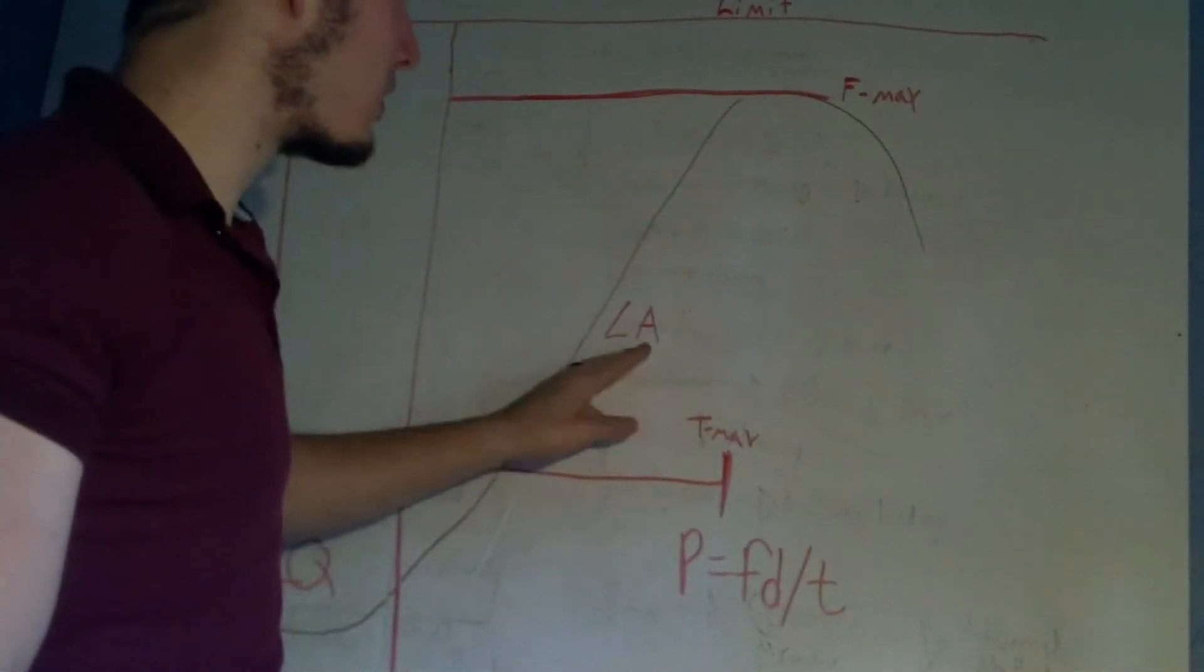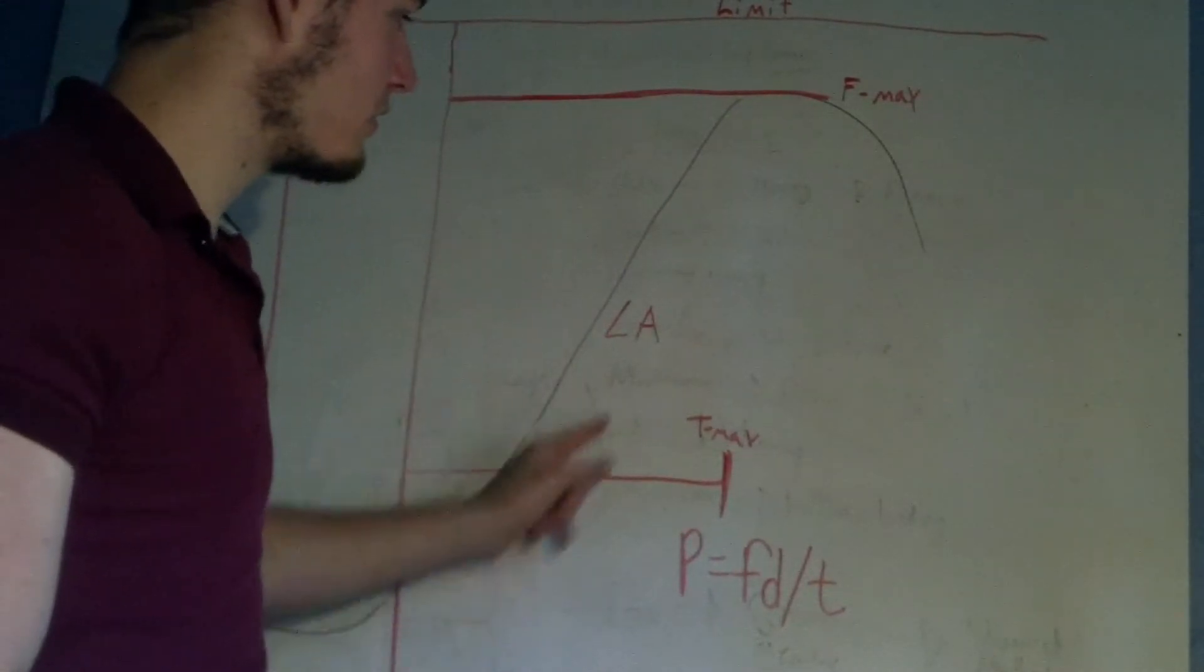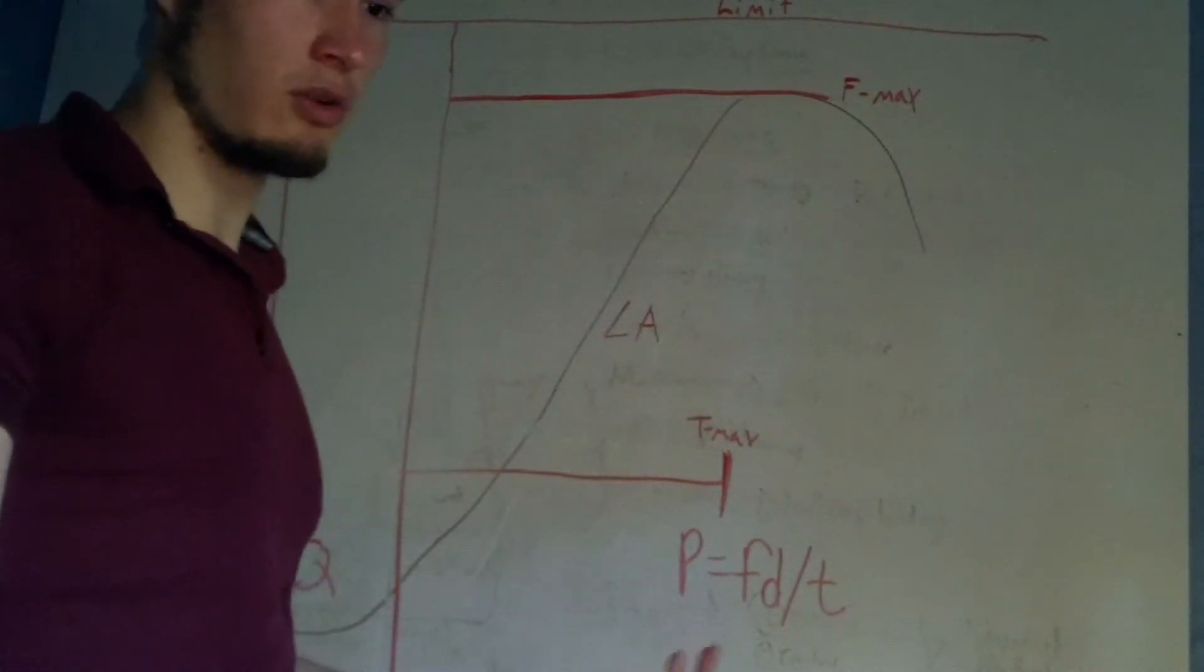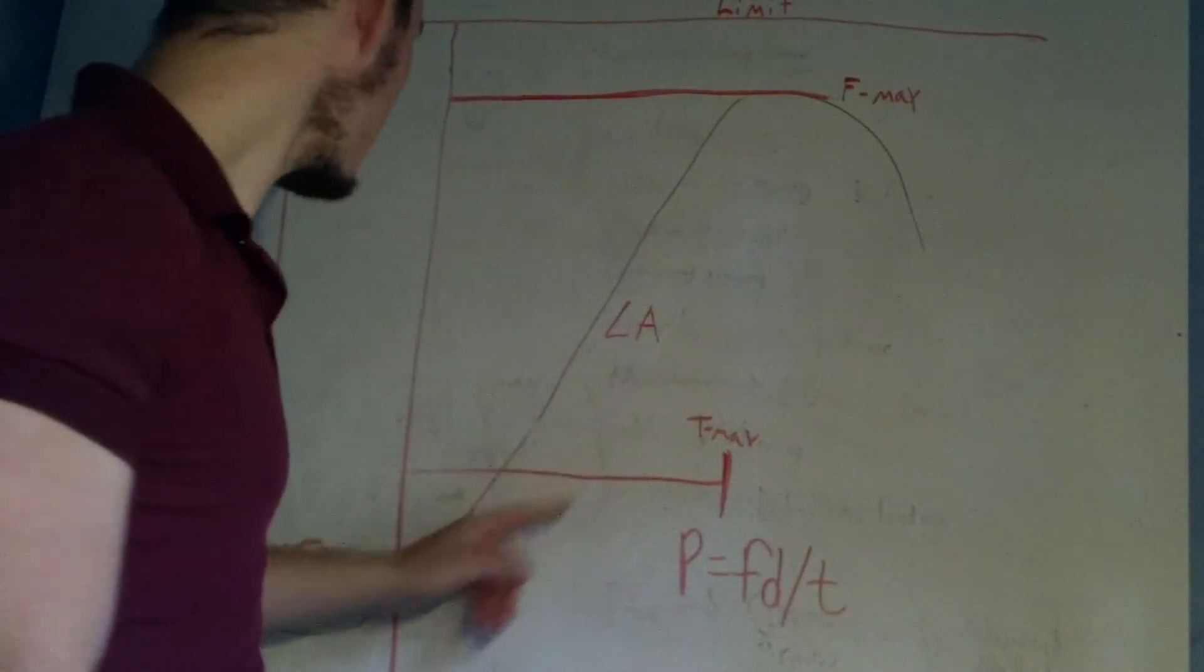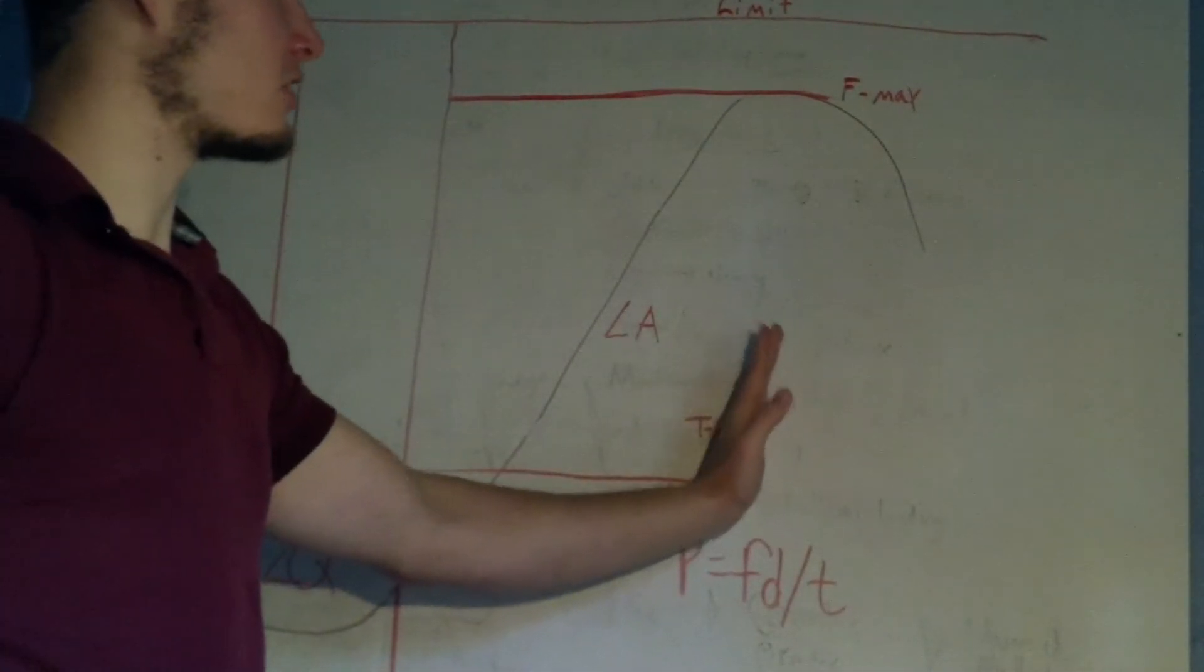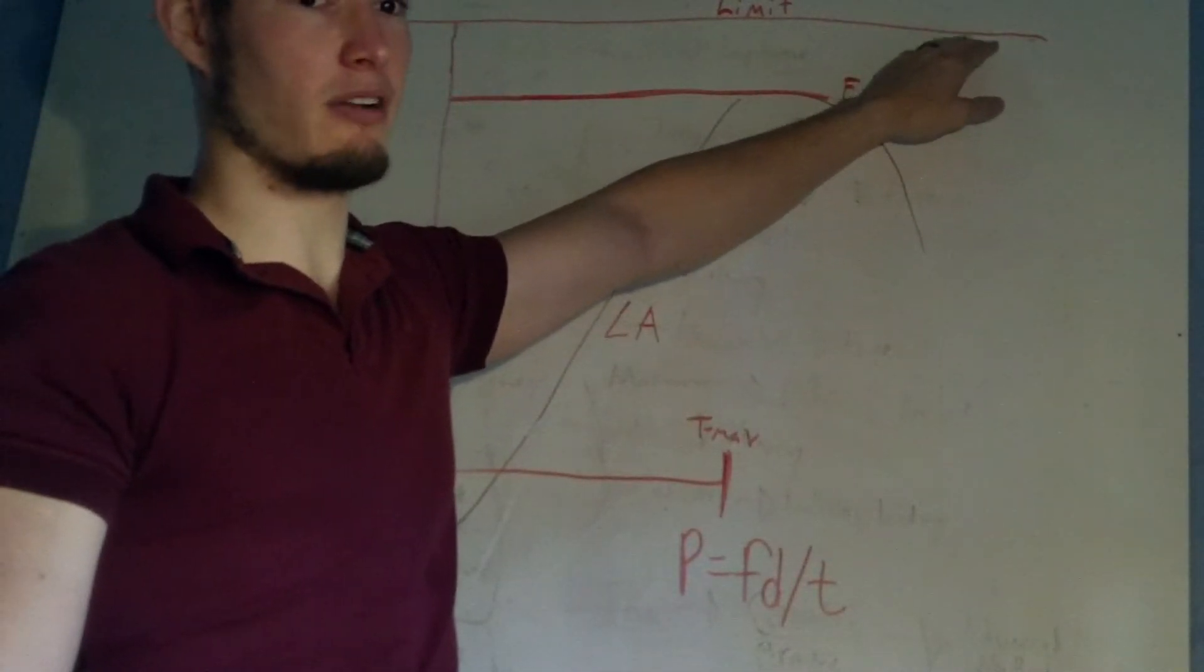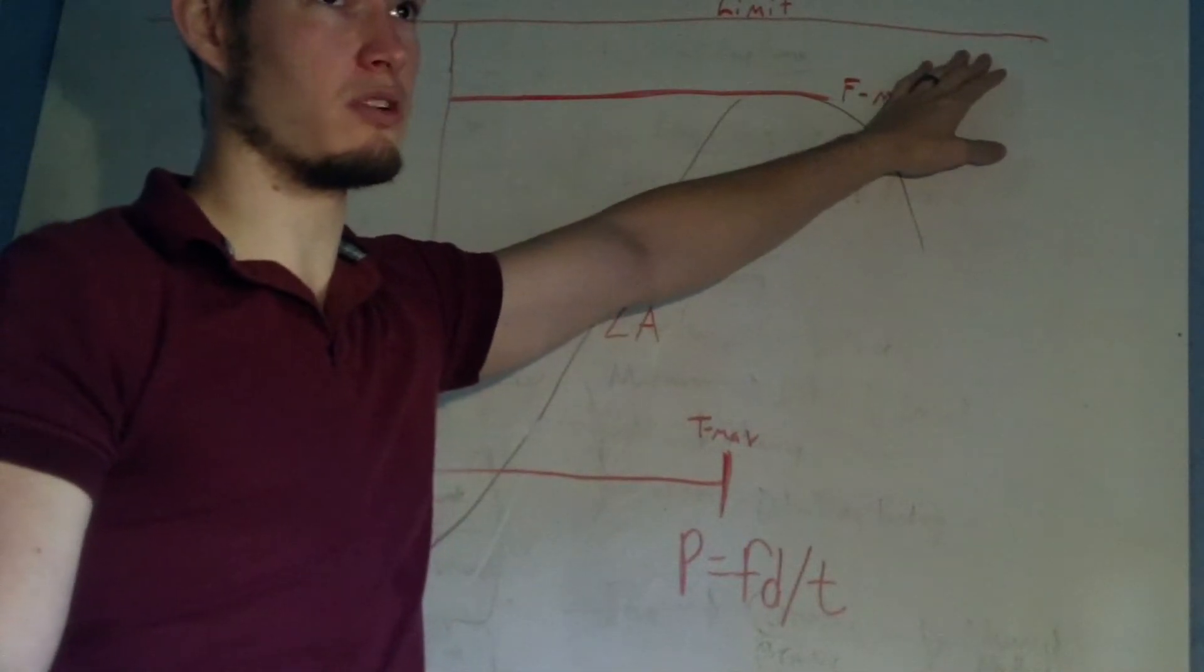This concentric slope up, also called angle A. Angle A is the angle of how steep this acceleration or increase of force is. You also have T max which is the amount of time in milliseconds it takes to reach your maximum force. And then you have your limit at the top. That's the maximum amount of force in ideal situations you could produce.